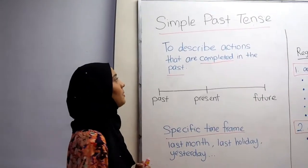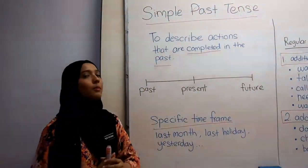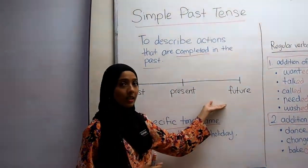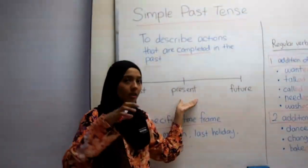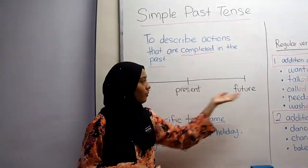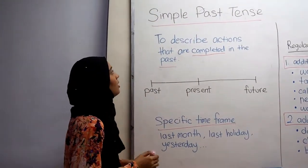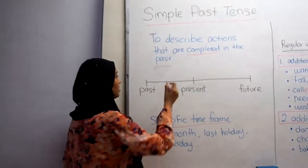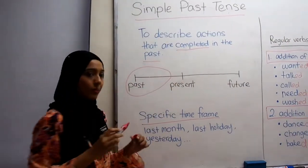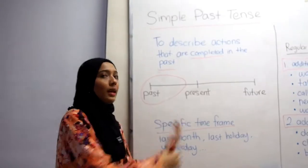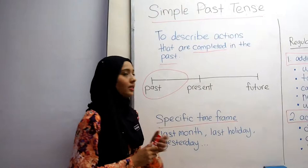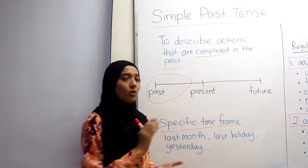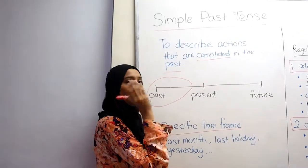Simple past tense is used to describe actions that are completed in the past. To help you understand better, let's look at the timeline. The present is the current time, the future is ahead, and the past is behind. If we use simple past tense, it means the action we are talking about happens sometime before the present — it starts in the past and it also ends in the past. There is no continuation of the action.